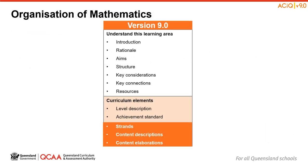In Session 1 of this series, we identified the changes to the strand structure, including how the three content strands in Version 8.4 have all been separated so there are now six strands. These six strands are Number, Algebra, Measurement, Space, Statistics and Probability.